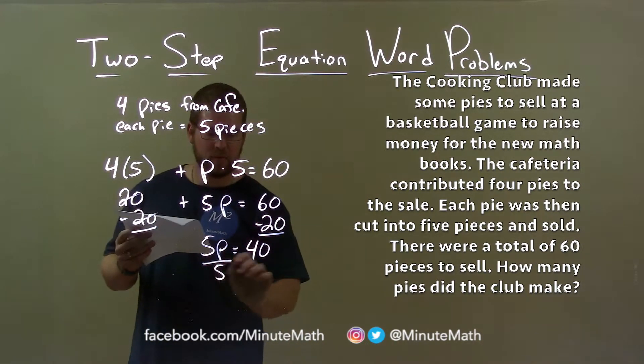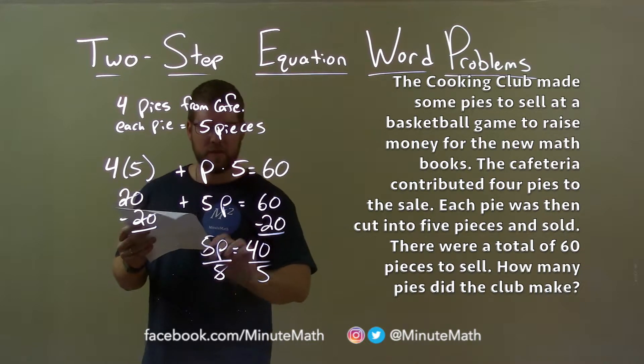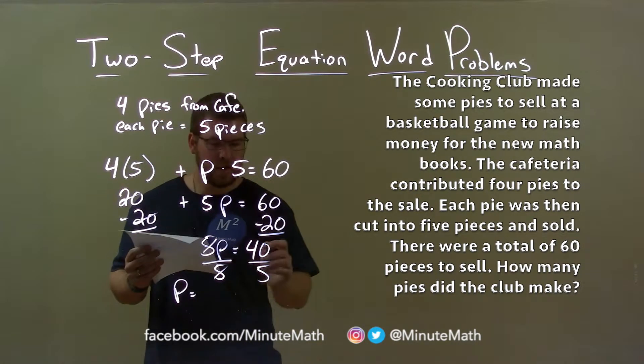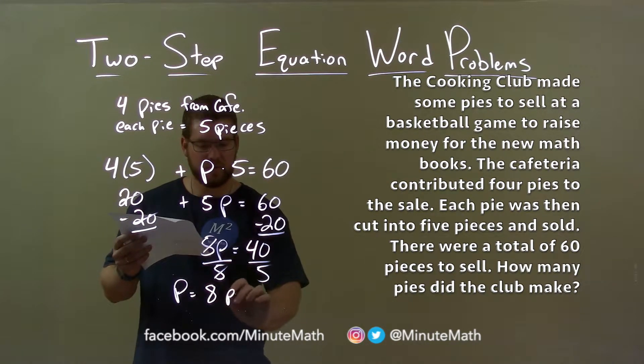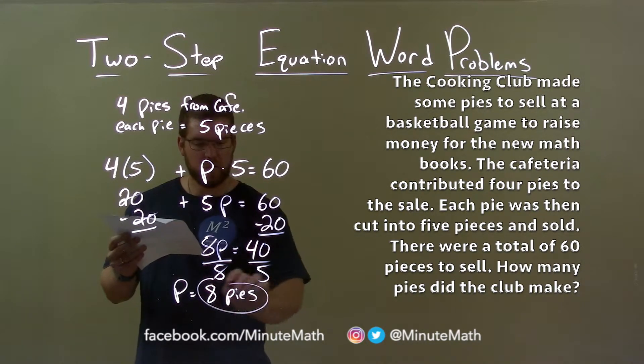I then divide both sides by five. Fives cancel here, and we're left with P by itself, and 40 divided by five is eight. So I have eight pies the club made.